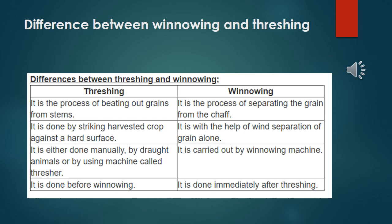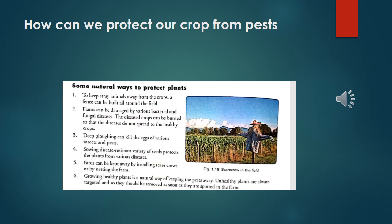Now I am going to discuss another question: how can we protect our plants from pests? Pests means animals, insects, etc. Point one: to keep stray animals away from the crops, a fence can be built all around the field — this is a common process. Point two: plants can be damaged by various bacterial and fungal diseases. The diseased crop can be burned so that the disease does not spread to healthy crops.